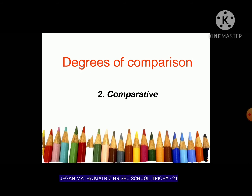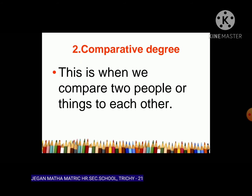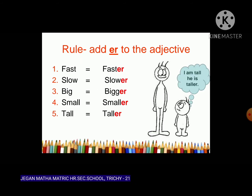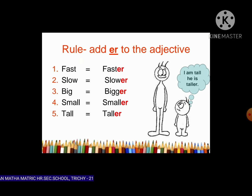Next, we are going to learn about the comparative degree. The comparative degree is used when we compare two people or things to each other. The rule is: add -er to the adjective. So we have: fast (positive) → faster (comparative); slow → slower; big → bigger; small → smaller.